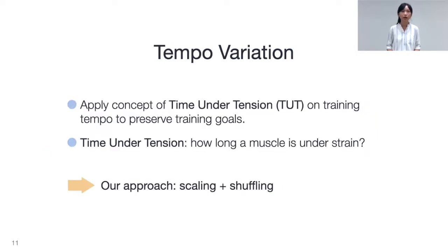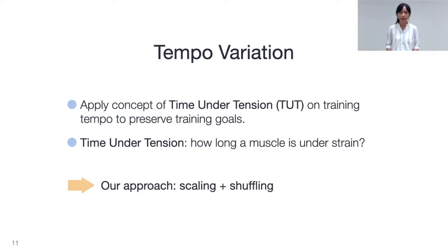Tempo is one of the important factors influencing training effect and differs according to training goals. So we apply the concept of time under tension on each phase of training tempo to preserve training goals, and then design the scaling plus shoggling tempo variation technique.